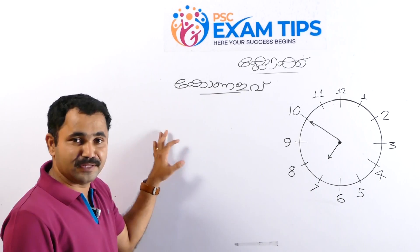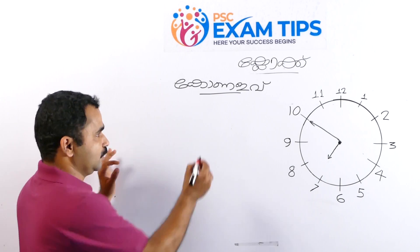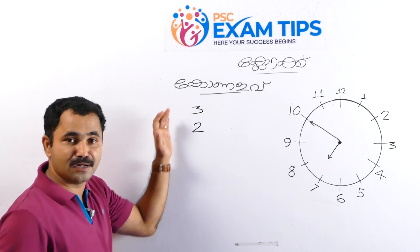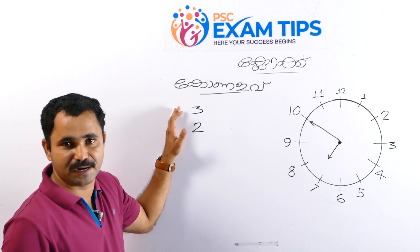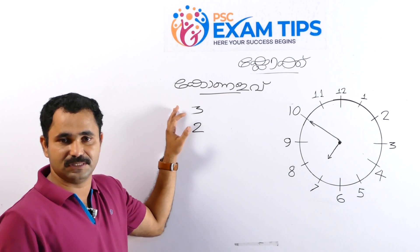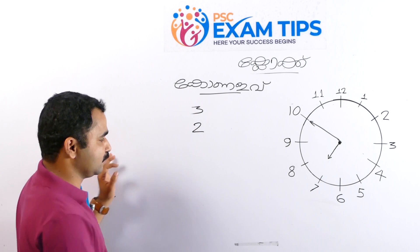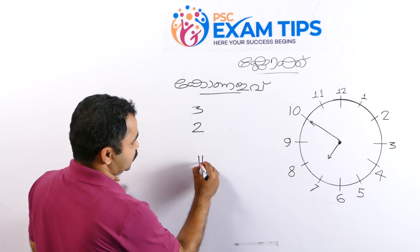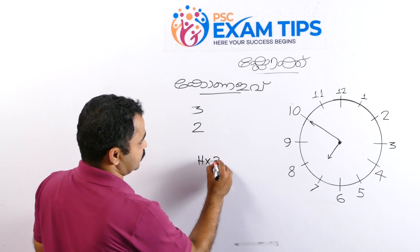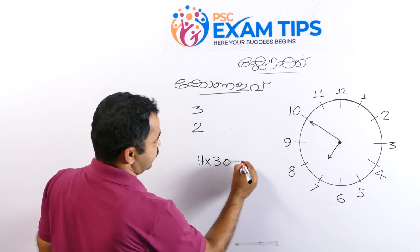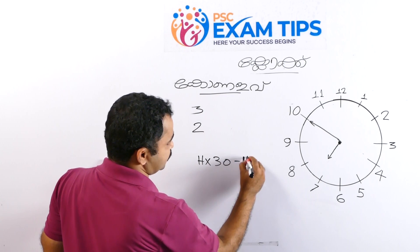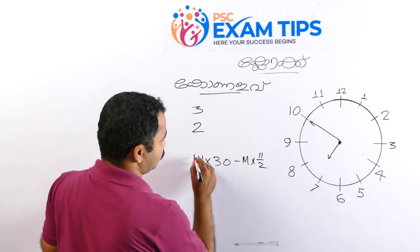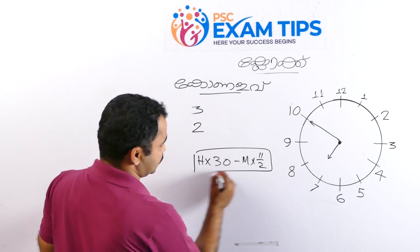Then we will try 3 ad beers. There is a formula that is applied: hour into thirty minus minute into eleven by two.